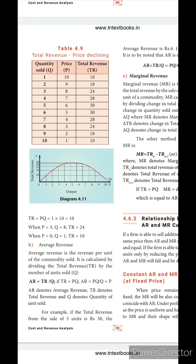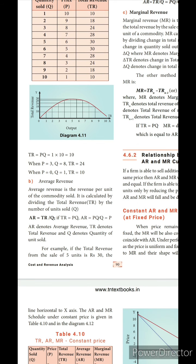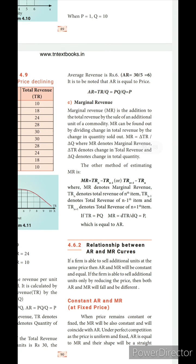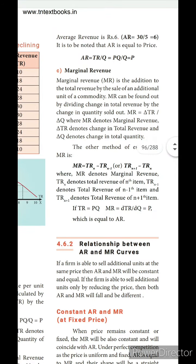Next we move to average revenue. Average revenue equals total revenue divided by quantity — the same formula of total divided by quantity that we already know. For marginal revenue: marginal means the addition. When you get an additional amount in total revenue from the sale of an additional unit of a commodity, that is called marginal revenue.